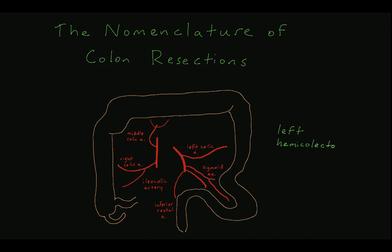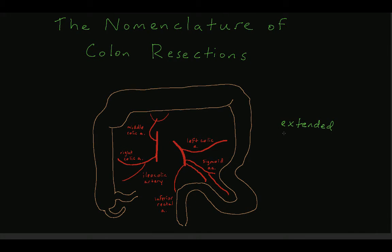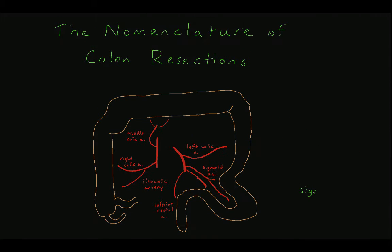A left hemicolectomy requires ligation of the left branch of the middle colic artery, the left colic artery, and the first sigmoid arteries. With this resection, the length of colon from distal left-sided transverse colon to the sigmoid colon is removed. An extended left hemicolectomy involves ligation of the entire middle colic artery, but is otherwise the same as a left hemicolectomy. This modification allows for a more proximal length of transverse colon to be resected. A sigmoidectomy requires ligation of the sigmoid arteries, allowing just the sigmoid colon to be removed.